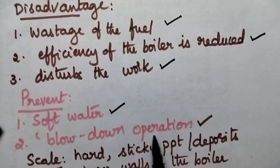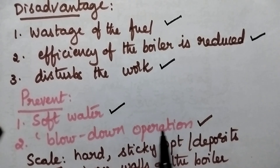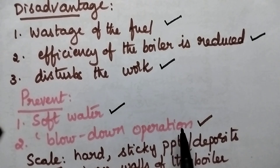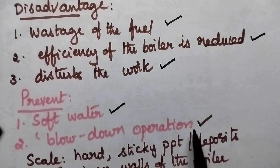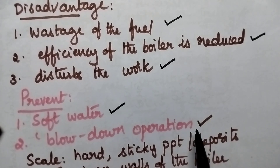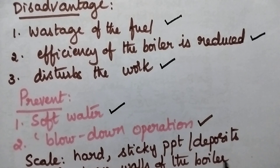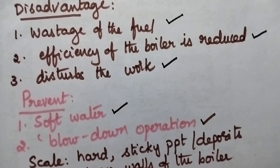Blow-down operation means the removal of soft, loose, and non-sticky precipitate formed in the boiler at regular intervals of time — that way we can avoid sludge formation. So moving to the scale.